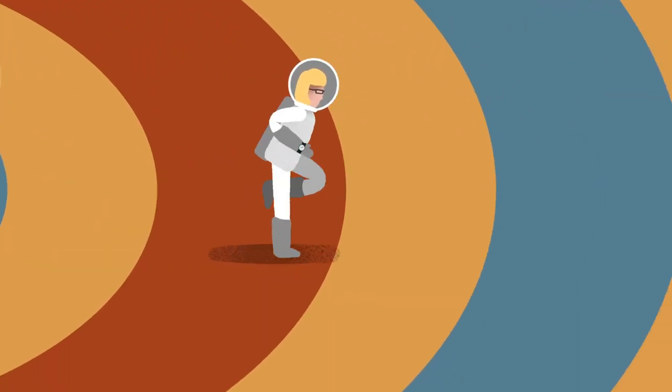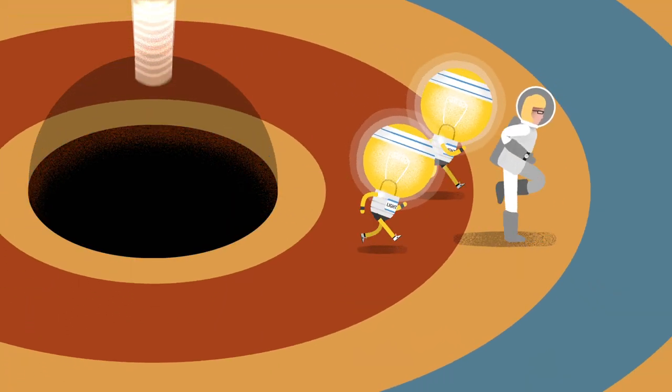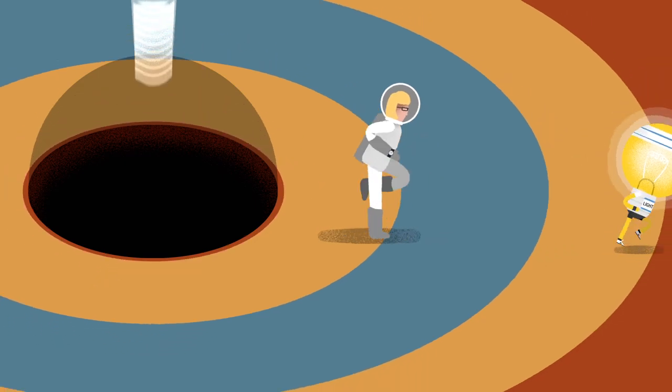At the point of the event horizon, Liz would have to travel at the speed of light to escape the gravity of the black hole. And this is impossible for her or any object to achieve.